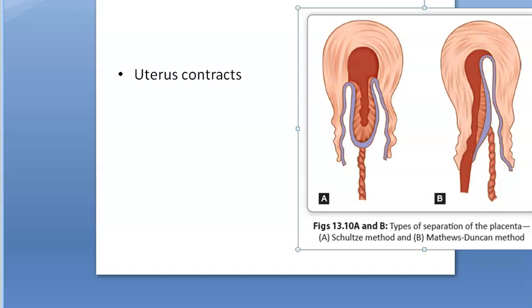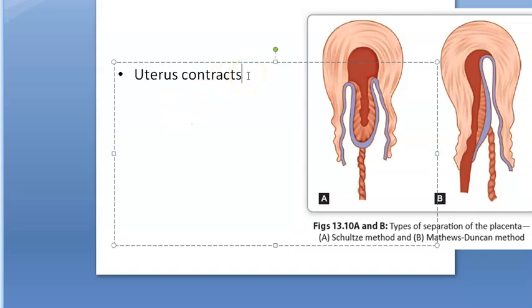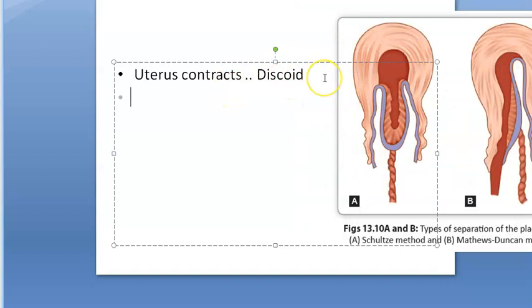After delivery of the baby, the uterus will contract and become smaller — about 20 centimeters vertically and 10 centimeters anteroposteriorly — and the shape will become discoid. The area where the placenta is attached to the uterus will also contract.